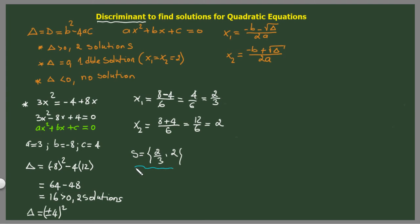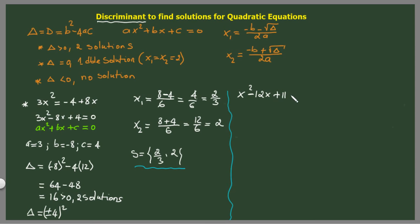This is how you can use the discriminant to solve a quadratic equation, and it's really fast because you already know if you have a solution or not. We can have another example: x² minus 12x plus 11 equals 0. In this case, we don't need to rearrange it because everything is already in standard form. So we just identify: a equals 1, b equals minus 12, and c equals 11.